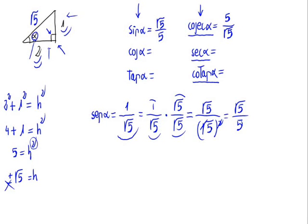Now the inverse function is very simple to calculate. Taking the pre-rationalized result of 1 divided by the square root of 5 and turning it around — since it is an inverse function — we get the square root of 5 divided by 1, which equals the square root of 5. So the cosecant of alpha equals the square root of 5.